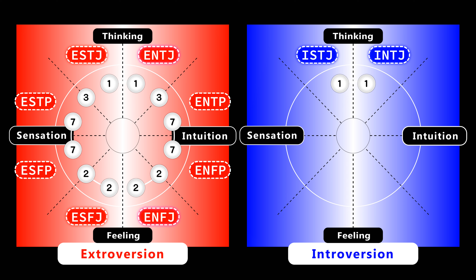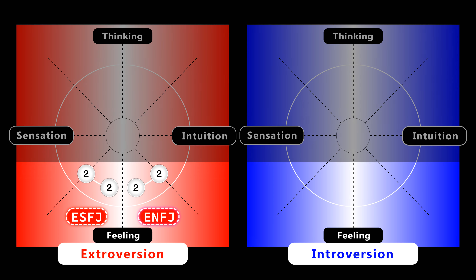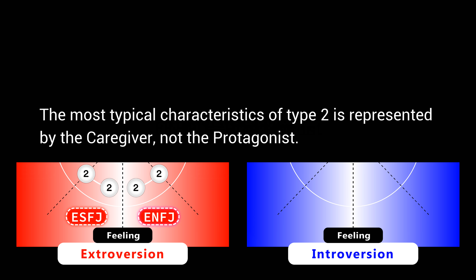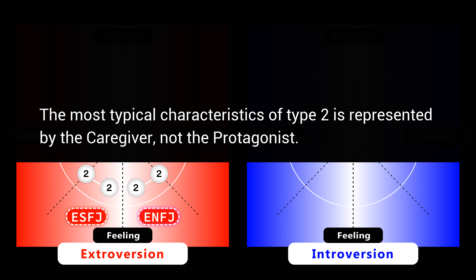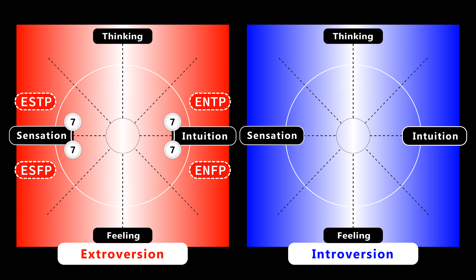For example, Type 2 tends to be ESFJ or ENFJ. ESFJ is called the caregiver — this naming perfectly represents the characteristics of Type 2. On the other hand, ENFJ is called the protagonist. With that said, the most typical characteristics of Type 2 are represented by the caregiver, not the protagonist. Type 7 tends to be ESTP, ESFP, ENTP, or ENFP. As we can see, Type 7 tends to be a perceiving type, not a judging type. ESTP and ESFP are extroverted sensation; on the other hand, ENTP and ENFP are extroverted intuition.